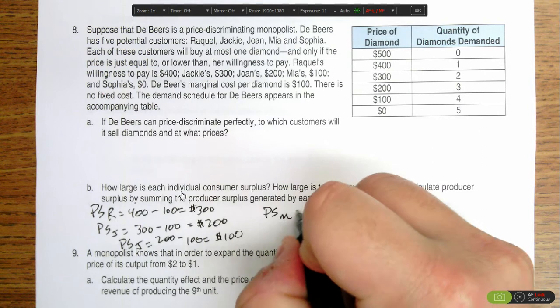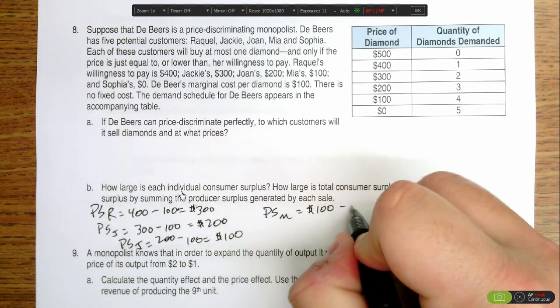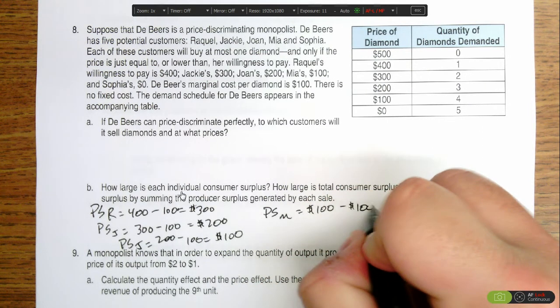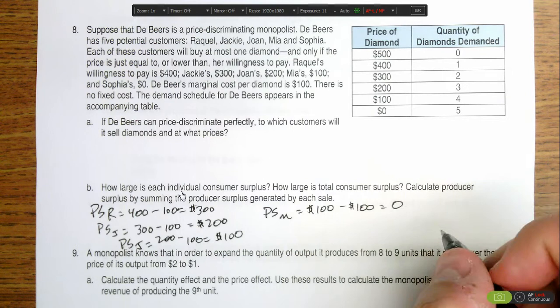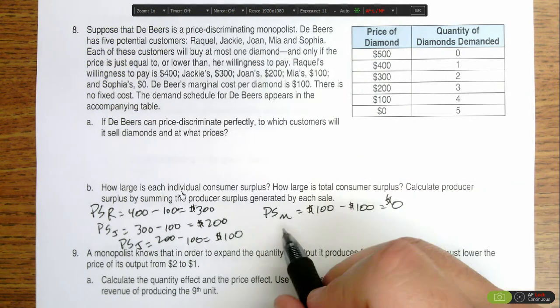Producer surplus for Mia, she was willing to pay $100. She did pay $100, it costs $100 to produce, so there's zero producer surplus for the diamond sold to Mia.